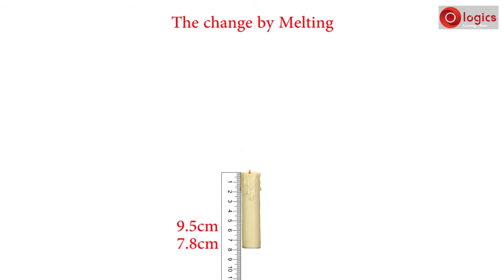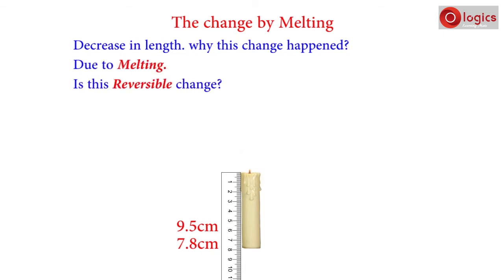You observe a decrease in length. Why did this change happen? Due to melting. Is this a reversible change? No, this is not a reversible change, because we cannot get the original state of the candle.